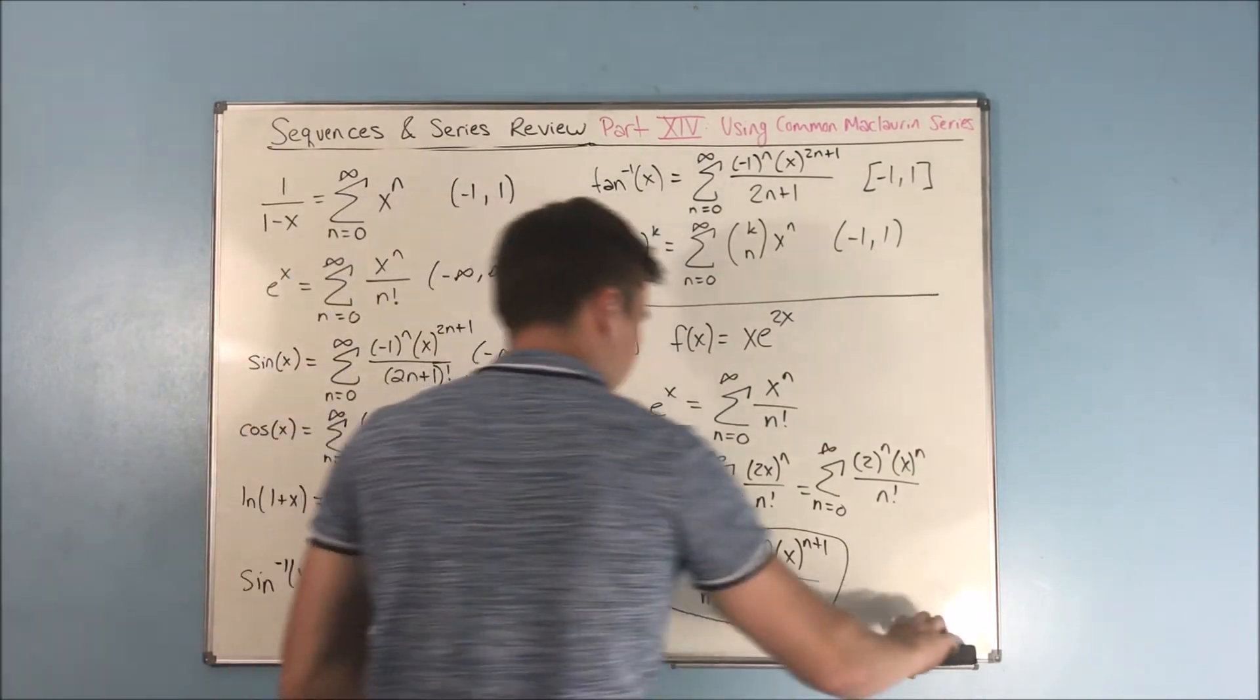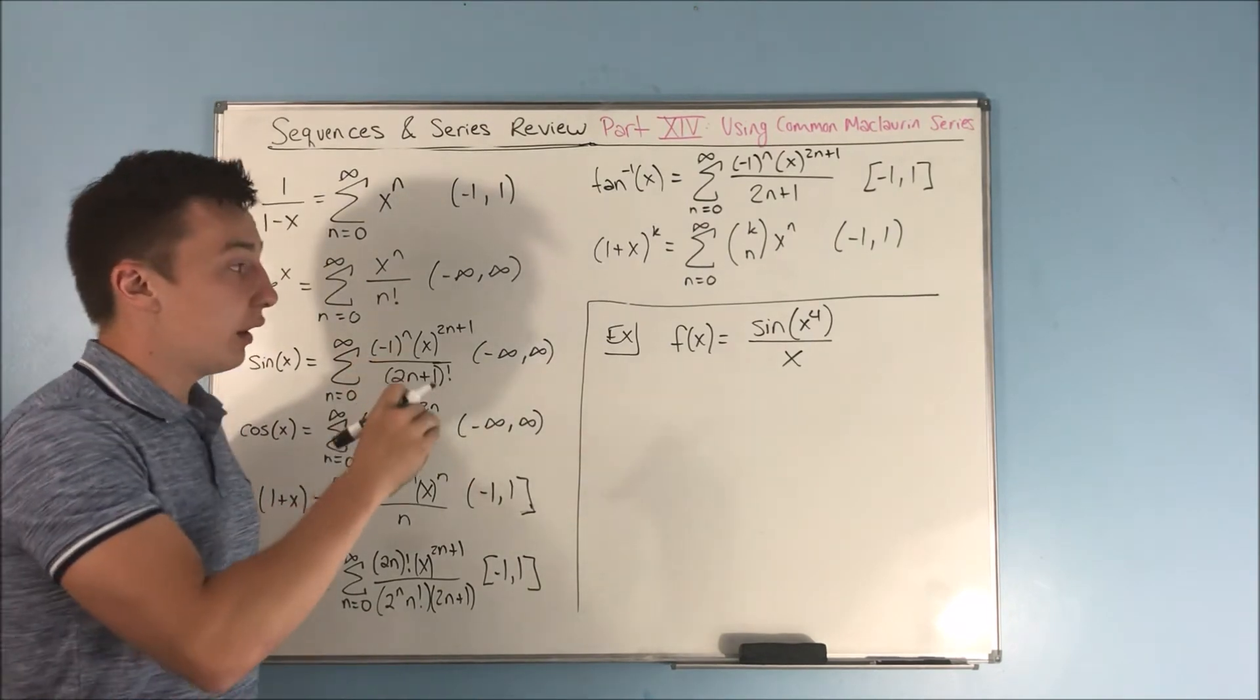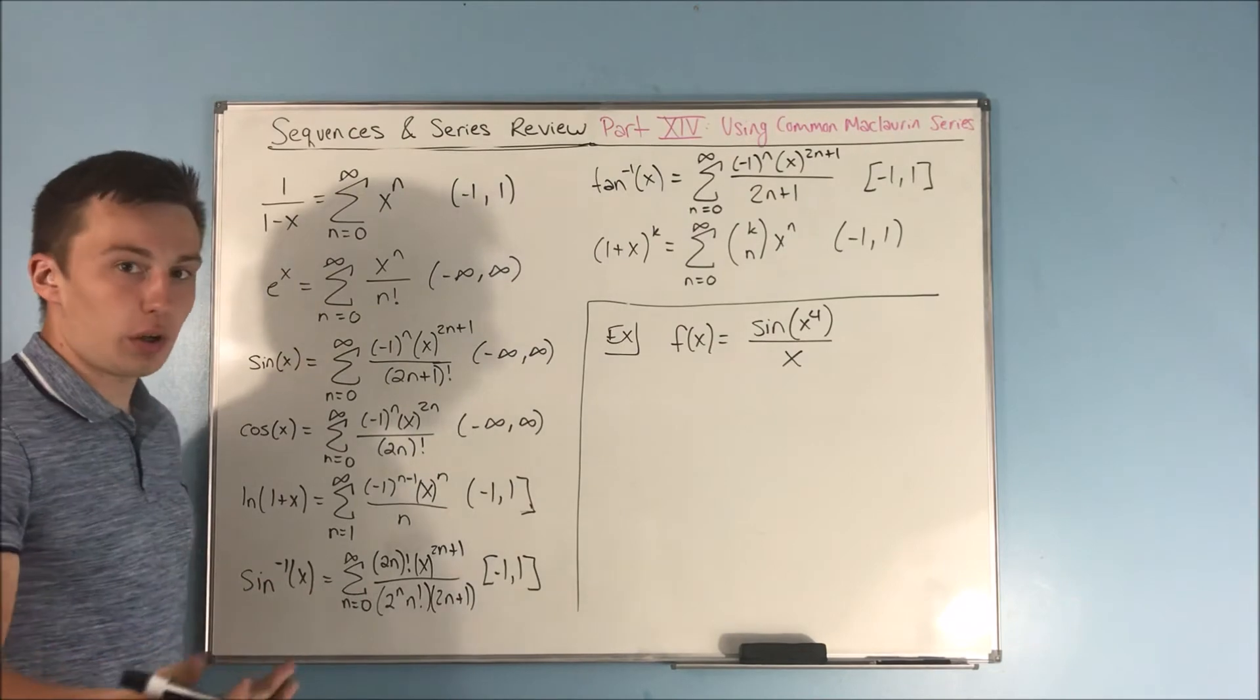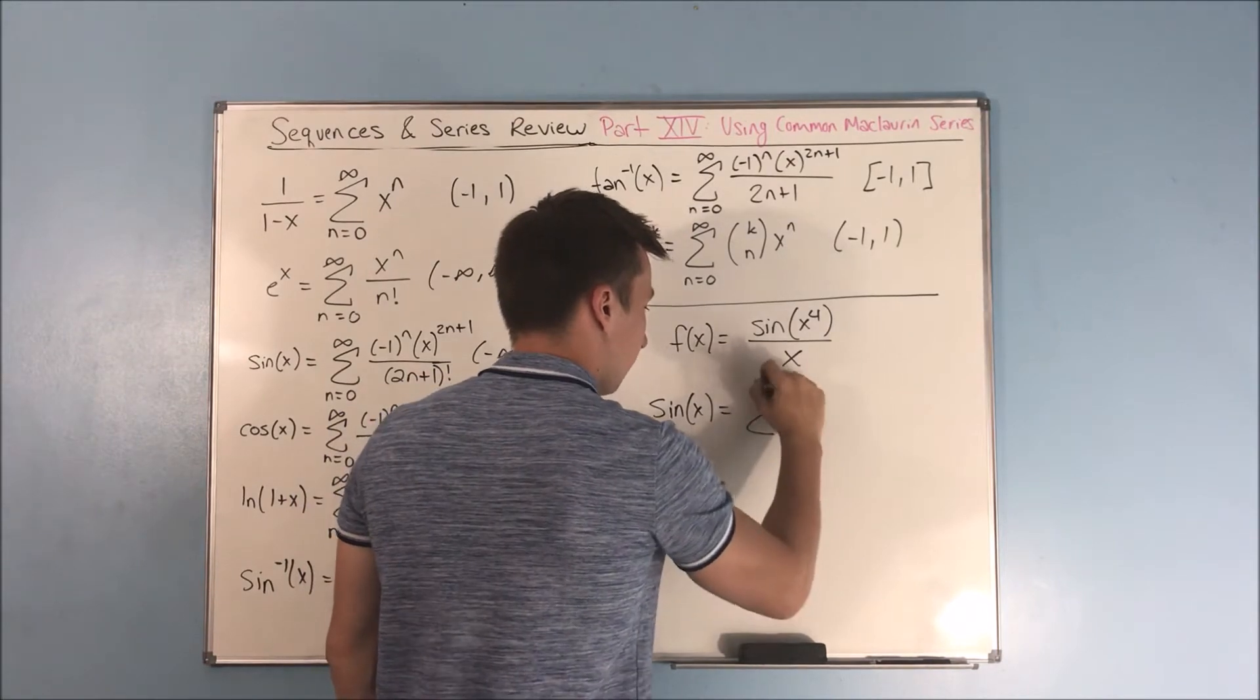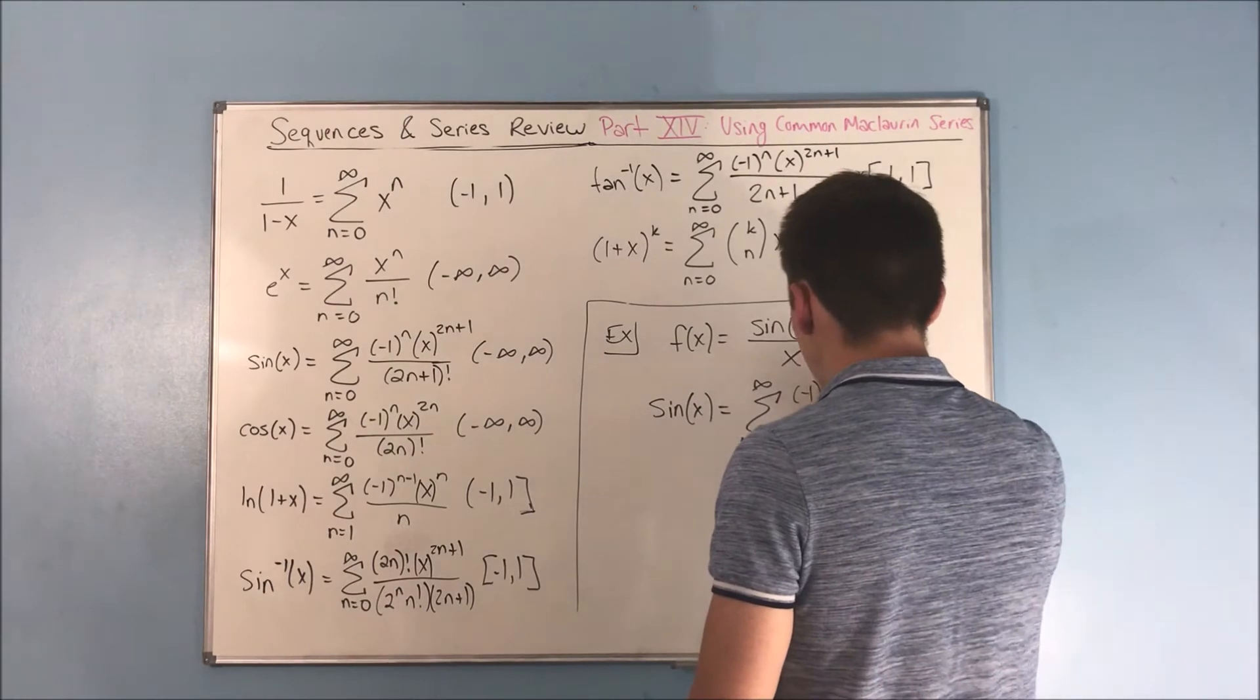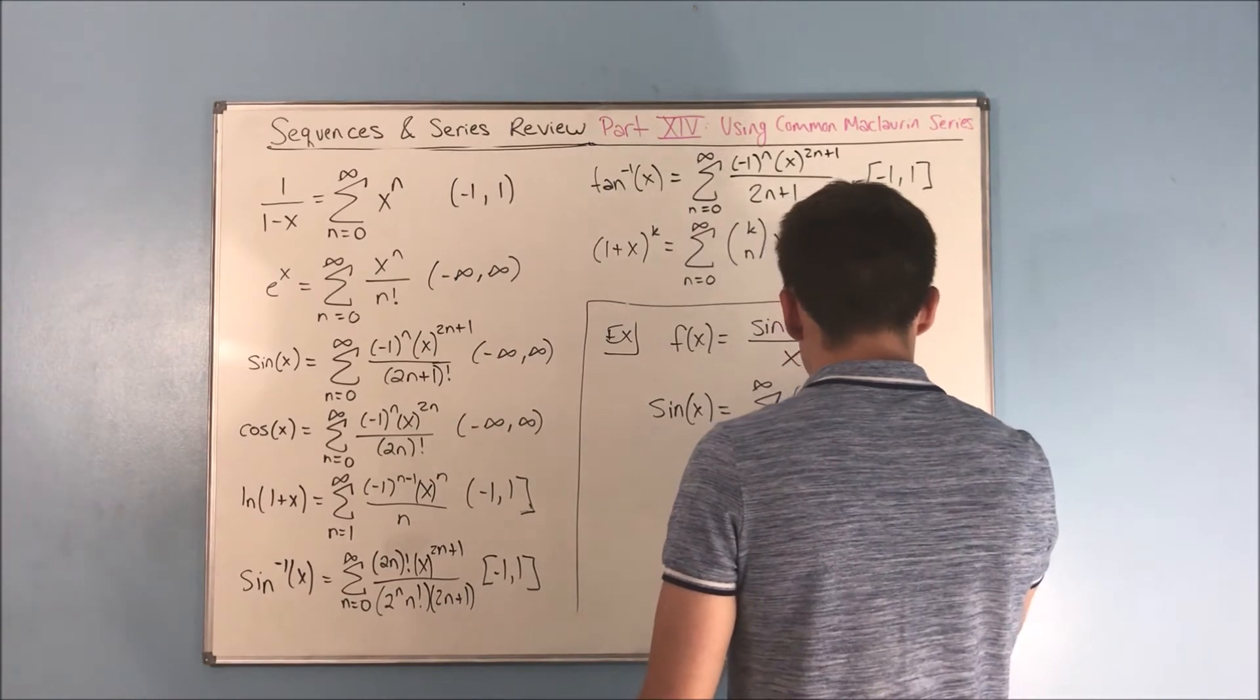Let's do one more example. Now, for our next example here, we have sine of x to the 4th over x. And we can just start off here from sine x. We know that that's the sum from n equals 0 to infinity of negative 1 to the n times x